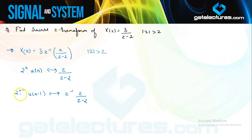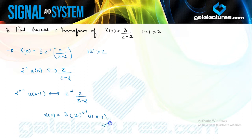Also, we had the constant 3, which you can just multiply on both sides. So clearly, X(N) is going to be 3 · 2^(N−1) · U(N − 1). This is the required sequence.